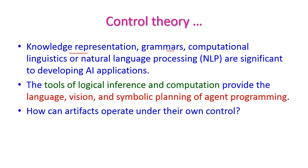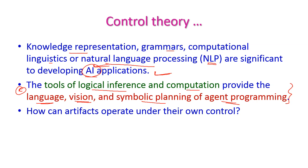Apart from this, knowledge representation, grammars, computational linguistics, and natural language processing (NLP) are also significant to develop AI applications. The tools for logical inference and computation provide the language — human language and vision. Vision is computer vision about the environment, and the symbolic planning of agent programming. By using control theory tools, we can develop AI applications and answer: How can artifacts — that is, artificial or agent programming — operate under their own control?